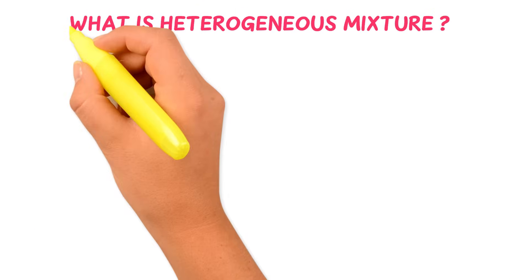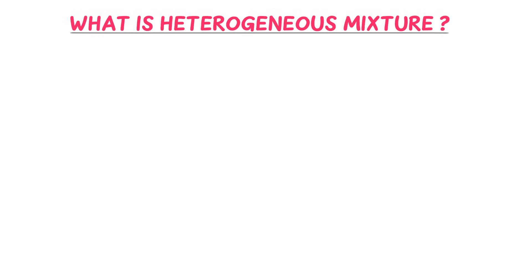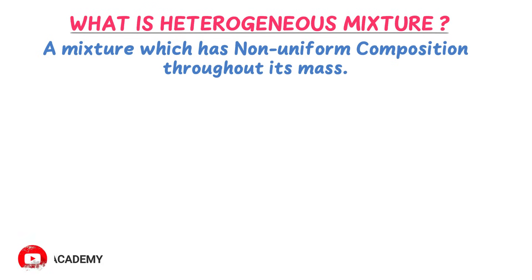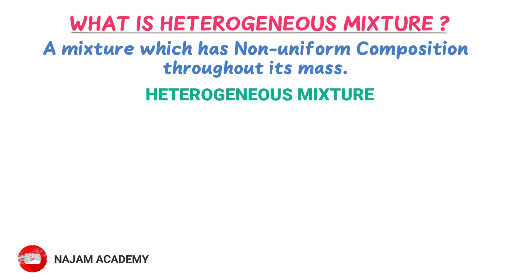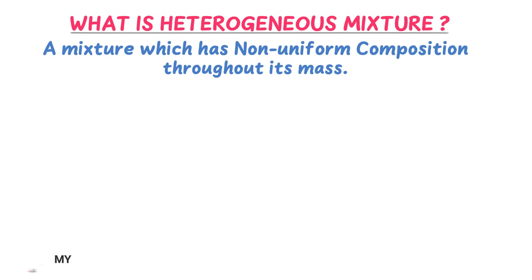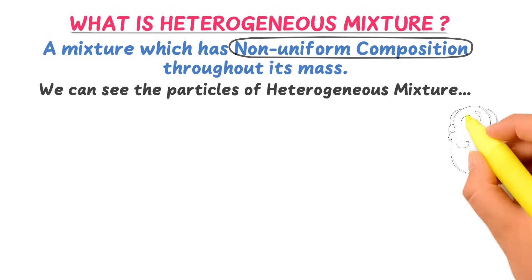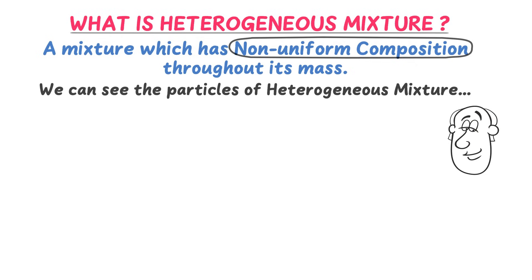Now, what is a heterogeneous mixture? A mixture which has non-uniform composition throughout its mass is known as a heterogeneous mixture. By non-uniform composition, we mean that we can see the particles of substances within the heterogeneous mixture with the naked eye.